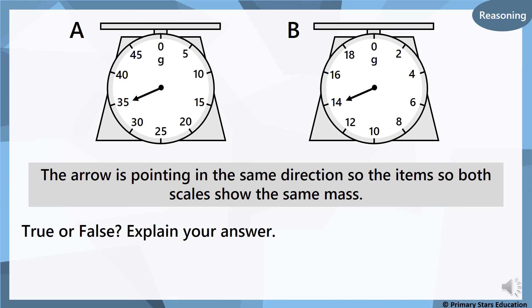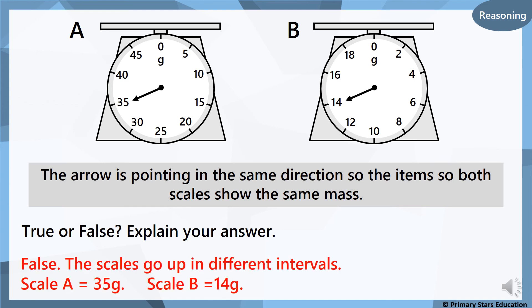This question says, look at the scales A and B. The arrow is pointing in the same direction so the items on both scales show the same mass. Is that right? Is it true or false? Can you explain your answer? You can pause it now and have a think or have a bit of discussion at home. See if you can come up with the answer. False. The scales go up in different intervals. They're on a different scale, aren't they? Scale A shows a measurement of 35 grams and scale B shows a measurement of 14 grams, because the arrow might be pointing in the same direction, but it's pointing to a different number altogether. I hope you got that one right.